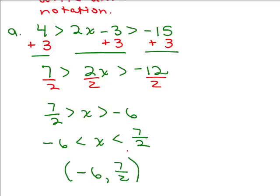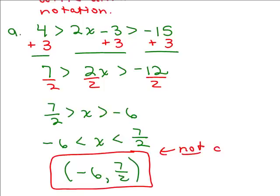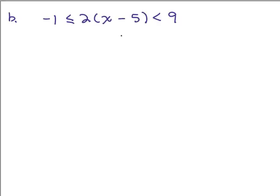Now this is not an ordered pair. You have to know what problem you're doing in context, and this says write the answer in interval notation. So this is what interval notation looks like when we're solving the problem. So if you just see this in isolation, something like negative 6, 7 halves, you would never know if you're looking at an ordered pair or you're looking at something in interval notation. Alright, let's work on part b.